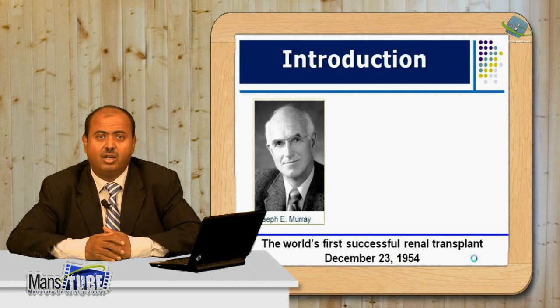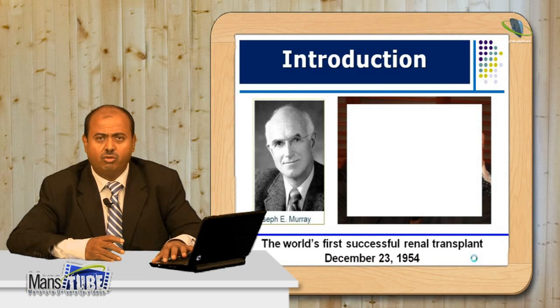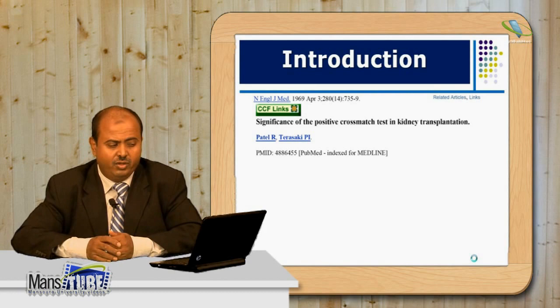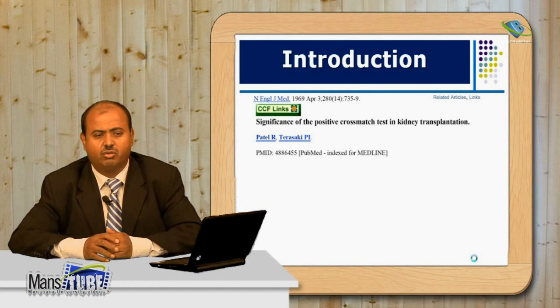The secret of success depended on using an identical twin as donor, so the graft was maintained for nine years without immunosuppression until it failed due to recurrence of the original disease. I am honored to have this photo with Professor Joseph Murray. Until 1969, the crossmatch was not considered in transplantation.